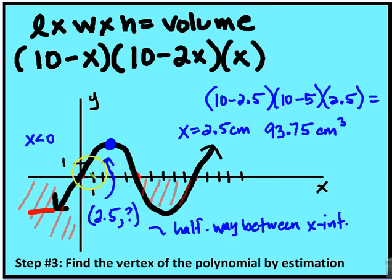So we're going to find the vertex of the local maximum here, and we're going to estimate the local maximum is halfway between 0 and 5. That's 2.5. So 2.5 centimeters for the value of x which produces a cubic volume or a result of 93.75. And again, that's an estimate.